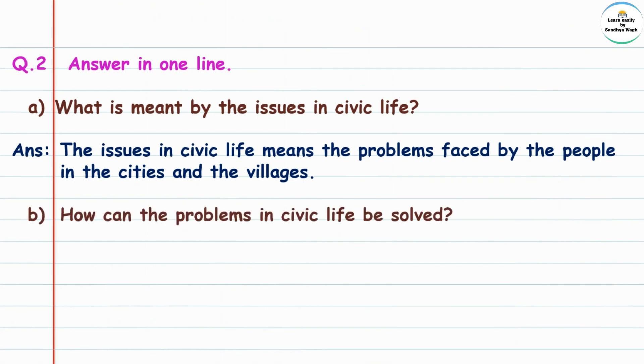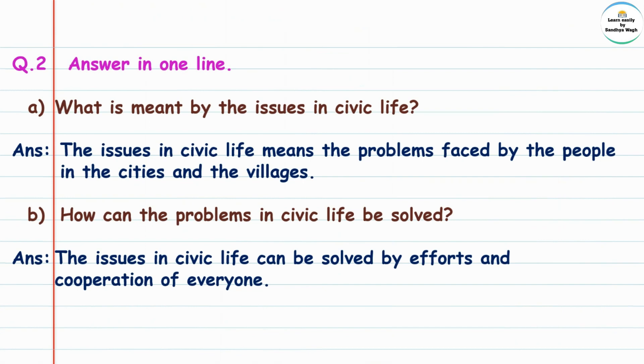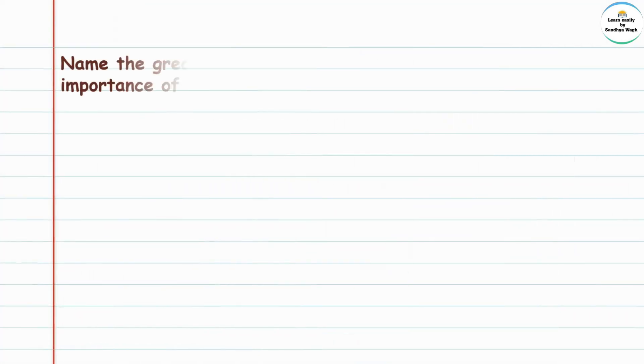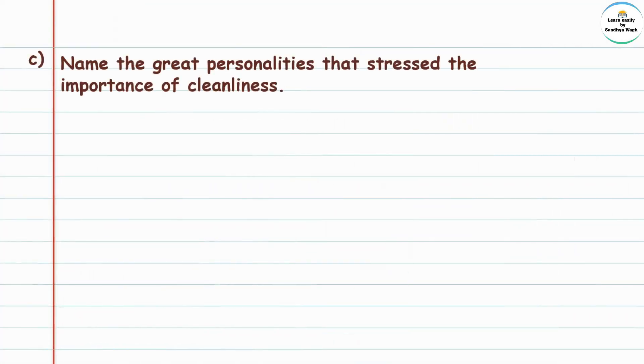How can the problems in civic life be solved? The issues in civic life can be solved by efforts and cooperation of everyone. Civic life's problems can be resolved through everyone's efforts and cooperation. Name the great personalities that stressed the importance of cleanliness.